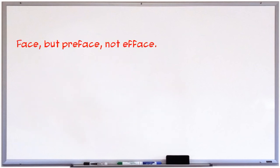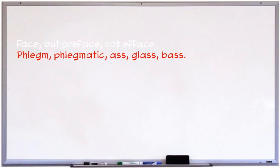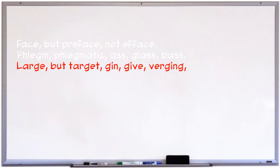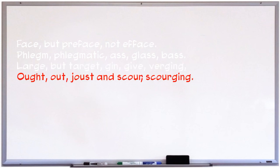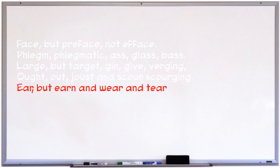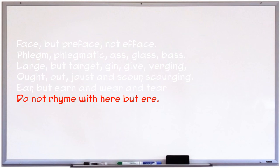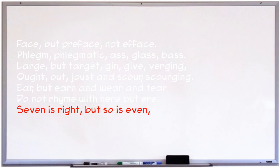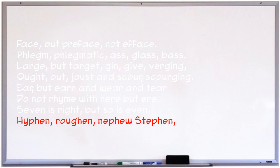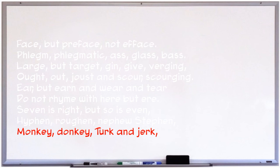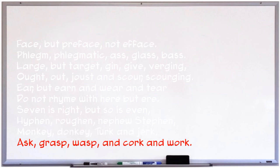Face, but preface, not efface. Phlegm, phlegmatic, ass, glass, base. Large, but target, gin, give, verging. Ought, out, joust, and scour, scourging. Ear, but earn, and wear and tear do not rhyme with here, but air. Seven is right, but so is even. Hyphen, roughen, nephew, Stephen. Monkey, donkey, turk, and jerk. Ask, grasp, wasp, and cork, and work. Pronunciation, think of psyche.